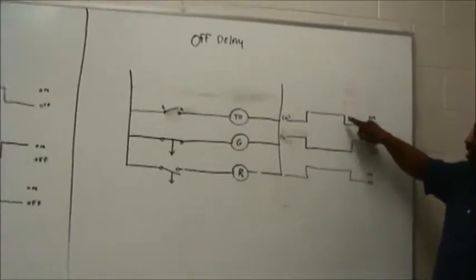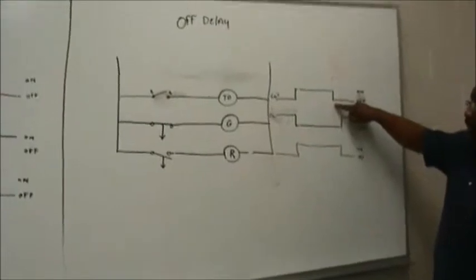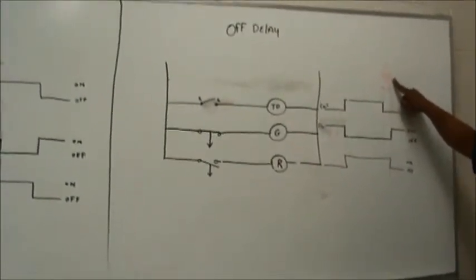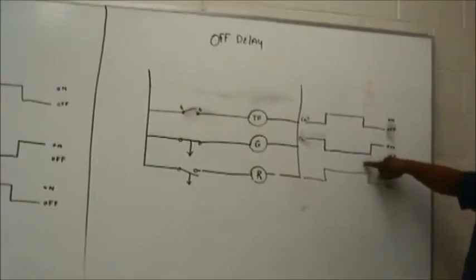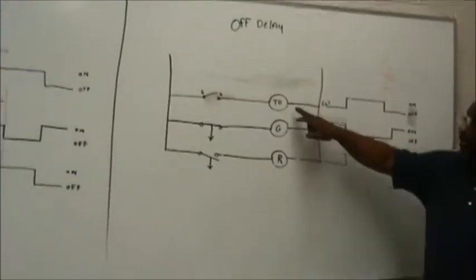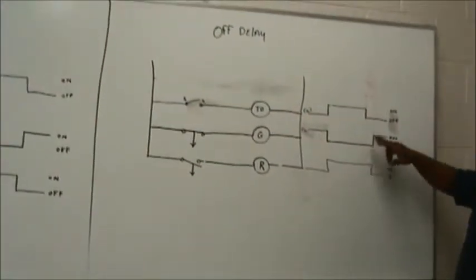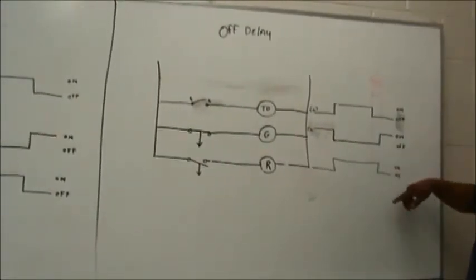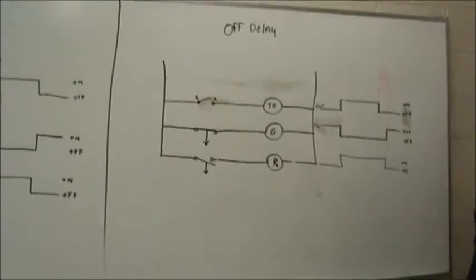Now, when I de-energize the coil of the timer, that's when the time starts counting, so that there will be a period, because the coil is no longer energized, there will be a period of time elapsed before the contacts go back to their original state.